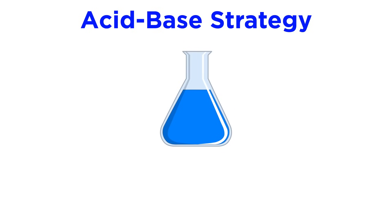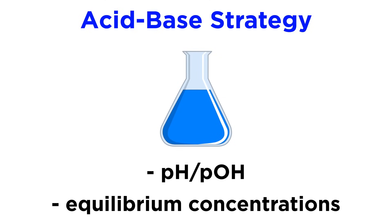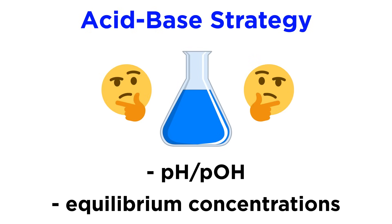There are many things we may ask about an acidic or basic solution. We may want to know the pH or the pOH. We also may want to calculate a particular equilibrium concentration. But no matter what the problem is, there are some questions we will want to ask so that we know how to set up the problem. This systematic approach will help us identify the best course of action so that we don't have to memorize many different problem types.